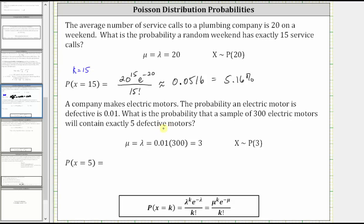So for this example, we do have to calculate the mean, or the average number of defective motors in a sample of 300. To find this, we multiply the defective rate times 300, giving us mu, or lambda, equals three.